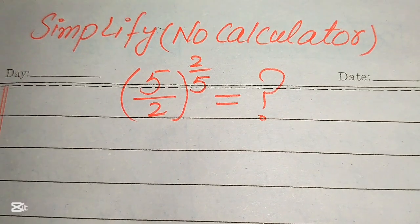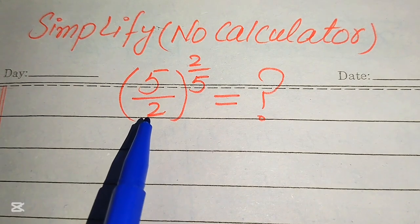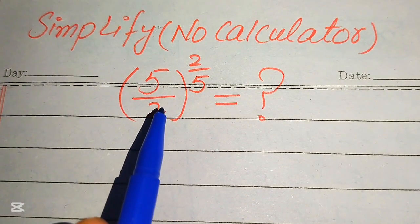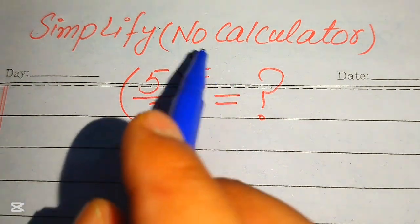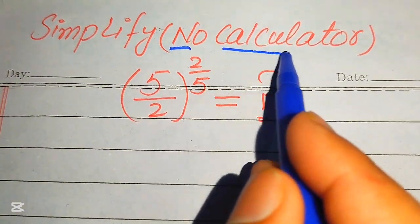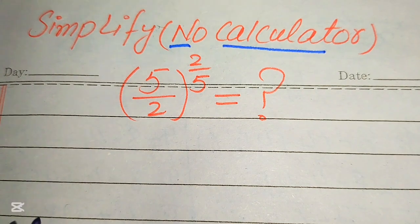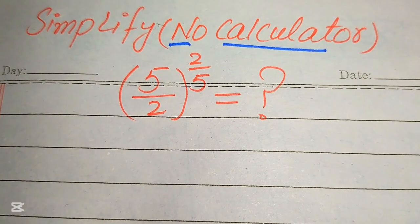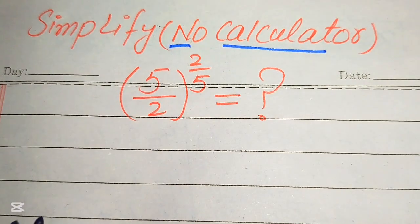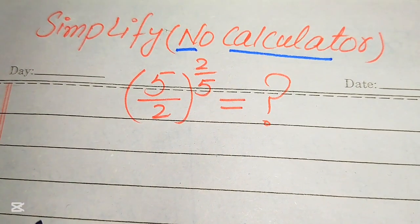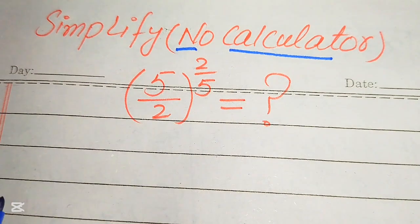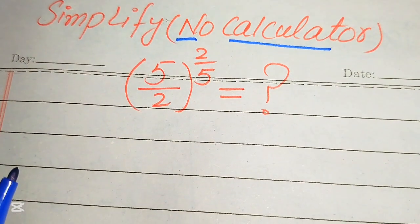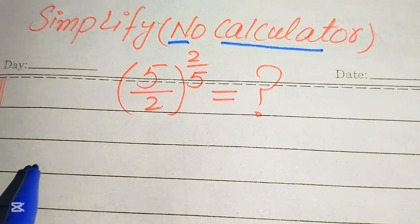Hello everyone, today I want to show you how to simplify this nice algebraic expression. We have 5 over 2 to the power of 2 over 5, and we write this expression into its lowest form. Note that a calculator is not allowed in this problem, which means we need to show all of the working on paper. Now we move to the solution of this problem.